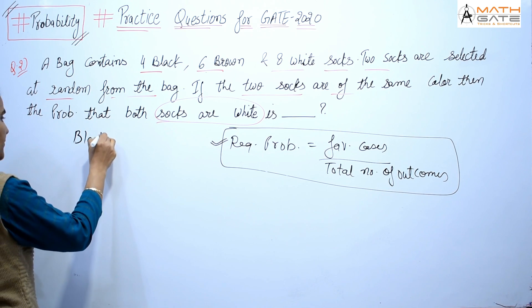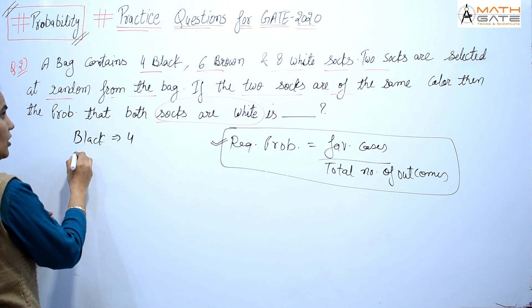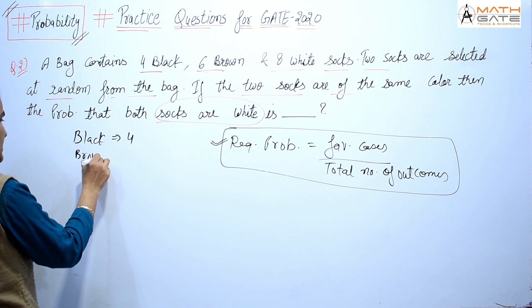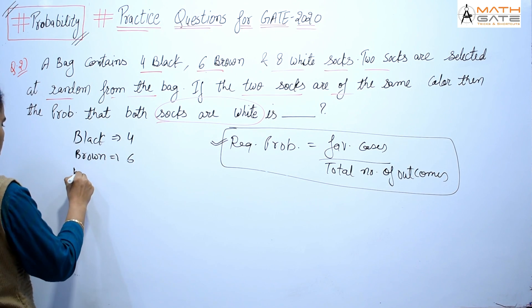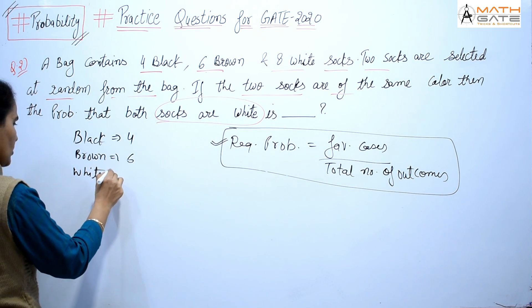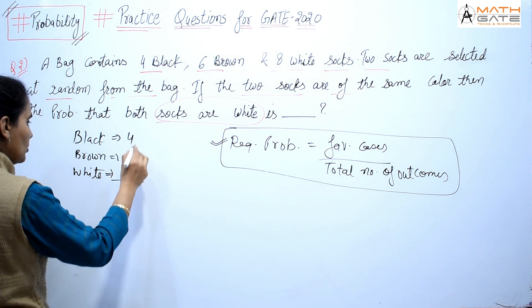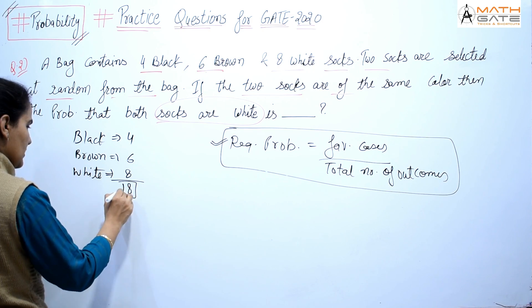Given: black is 4 socks, brown is 6 socks, white is 8 socks. So 3 color socks: white is 8, so total is 18 socks, right?